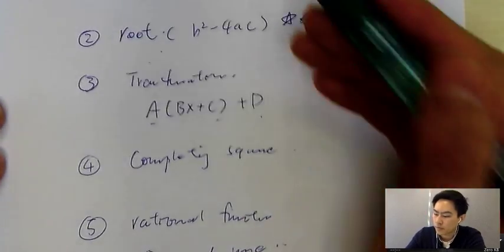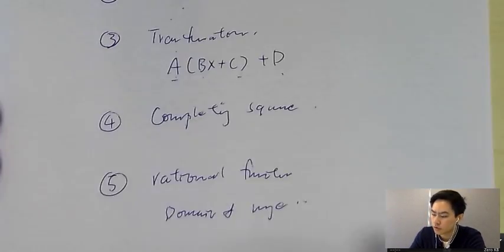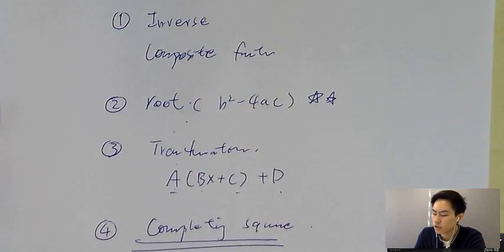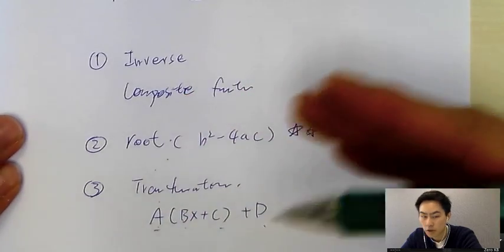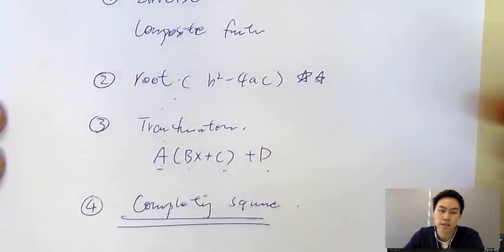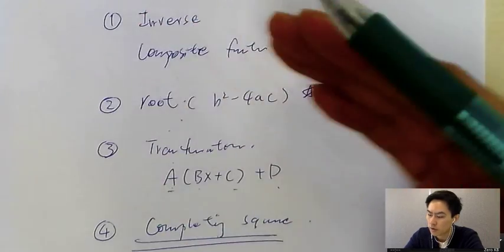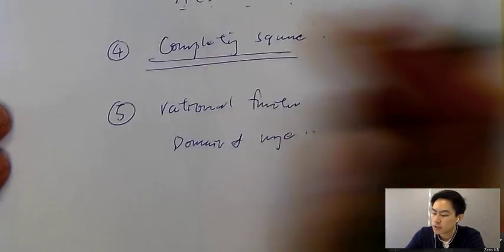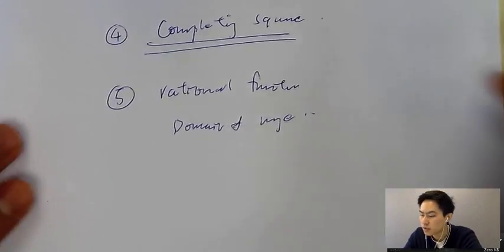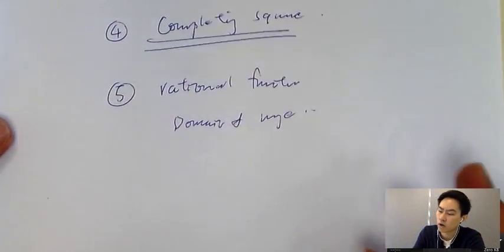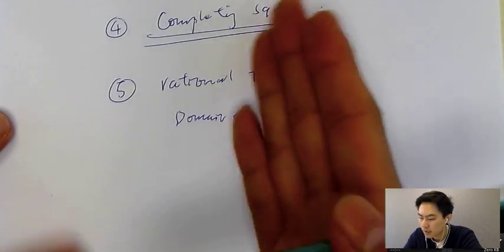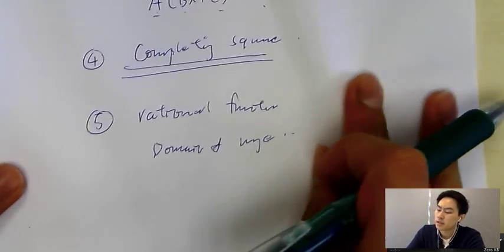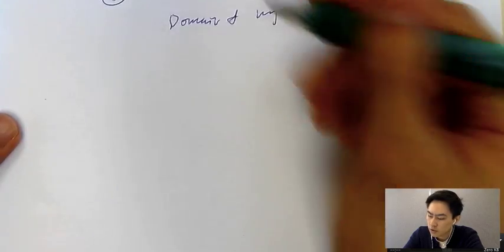In this video, I'll introduce the method for completing the square. For the rest of the topics, you can go to overseas.vnode.hk and register for a trial lesson — function node one or function node two. Many students don't know how to do completing the square, or they see a question asking for it and just skip it. Completing the square is actually very easy.